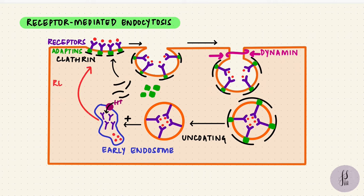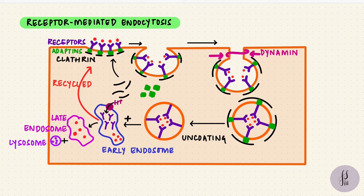So it's like a sorting center. The receptors are going to get recycled back to the plasma membrane. What's left behind are the ligands in the endosome, which is now going to form the late endosome. That late endosome will fuse with the lysosome. The lysosomal hydrolases break down and digest the content.